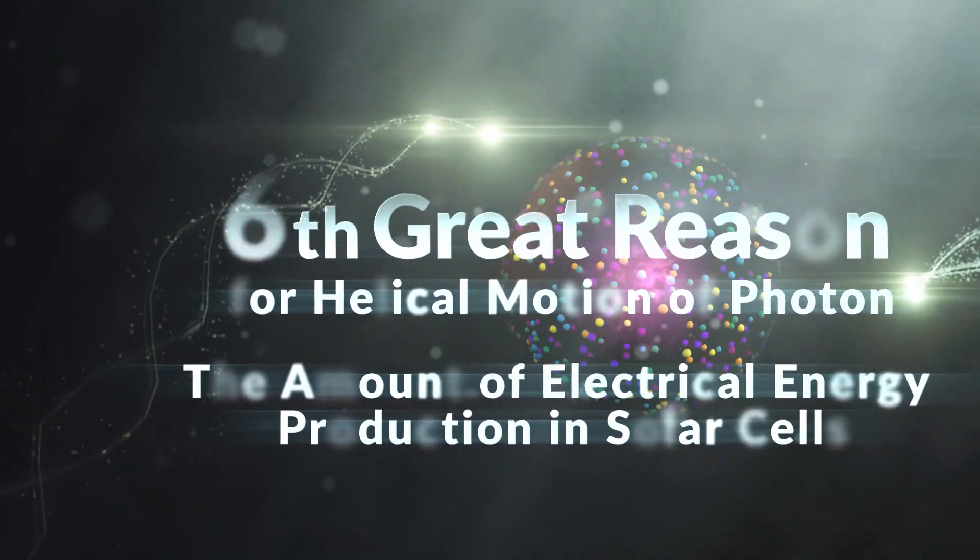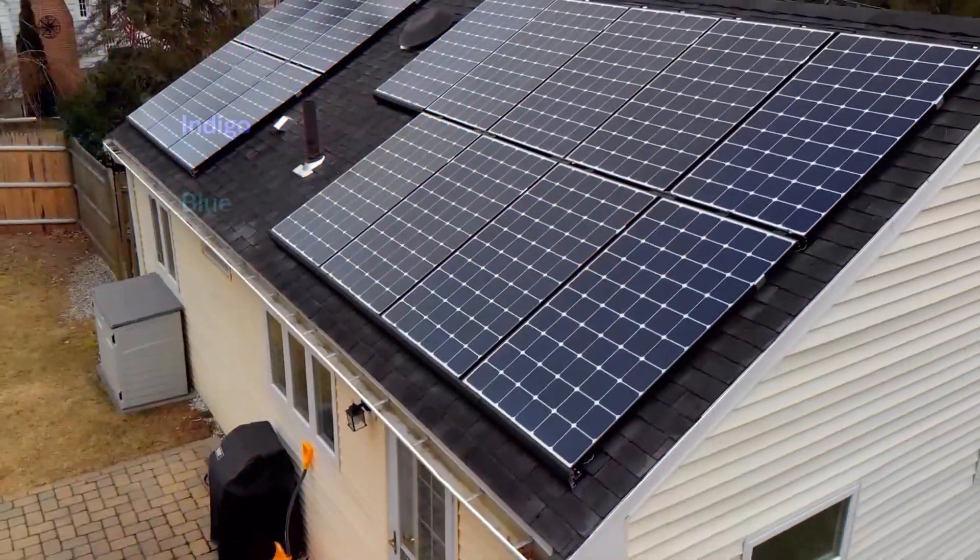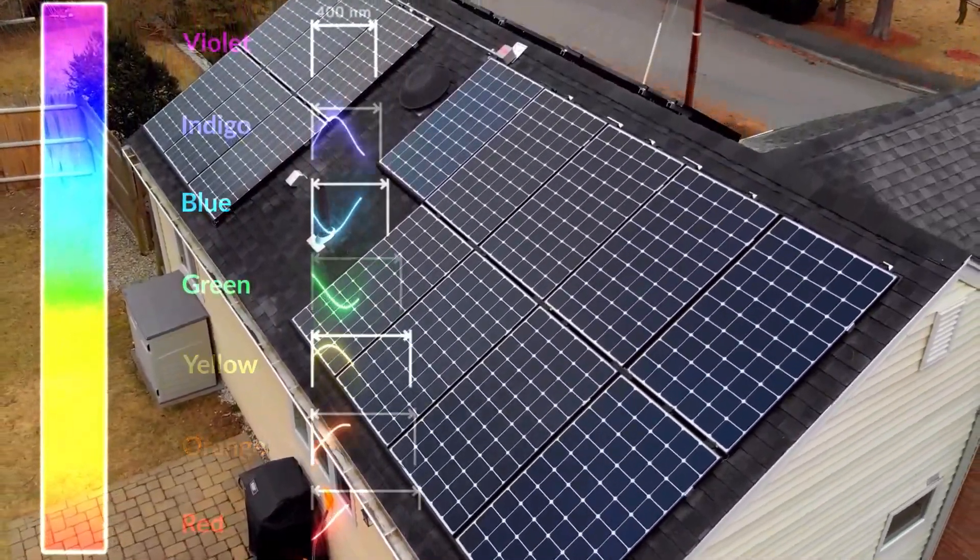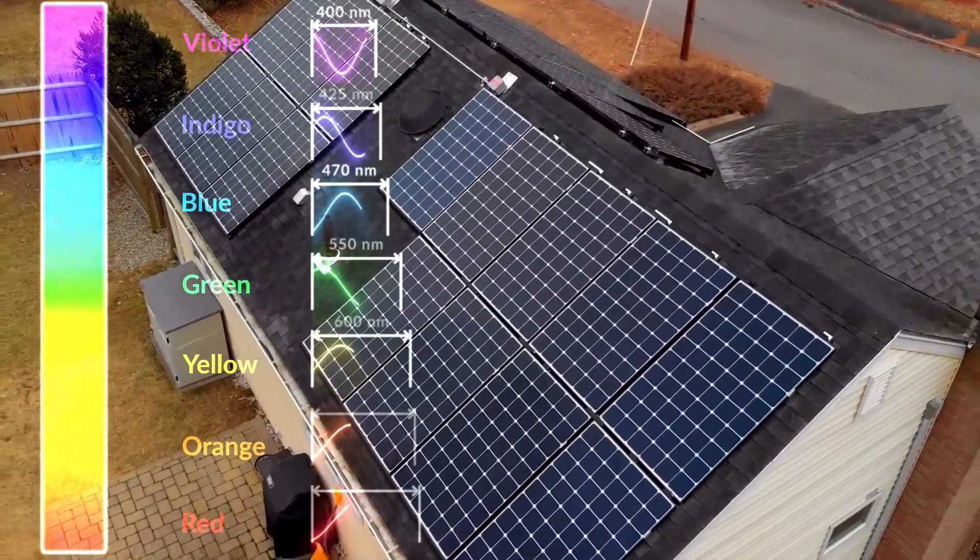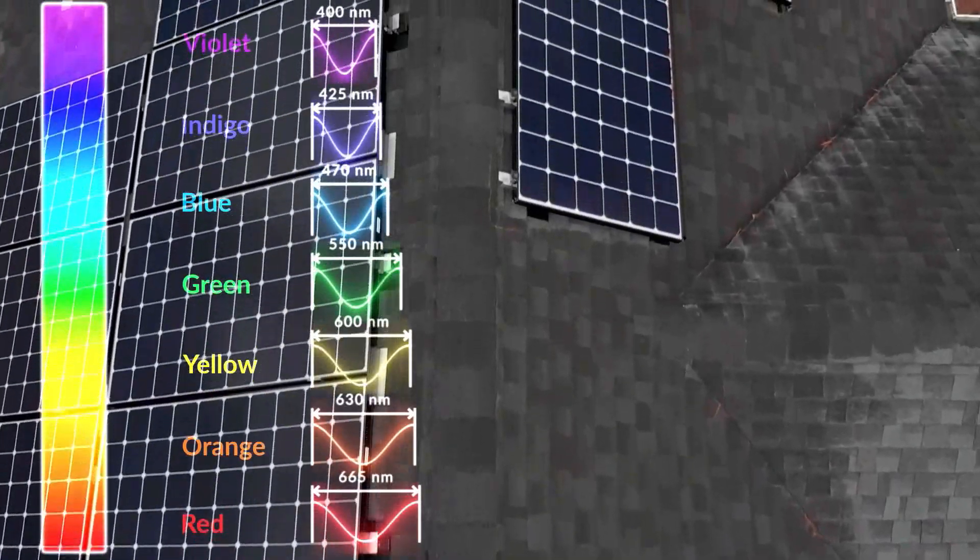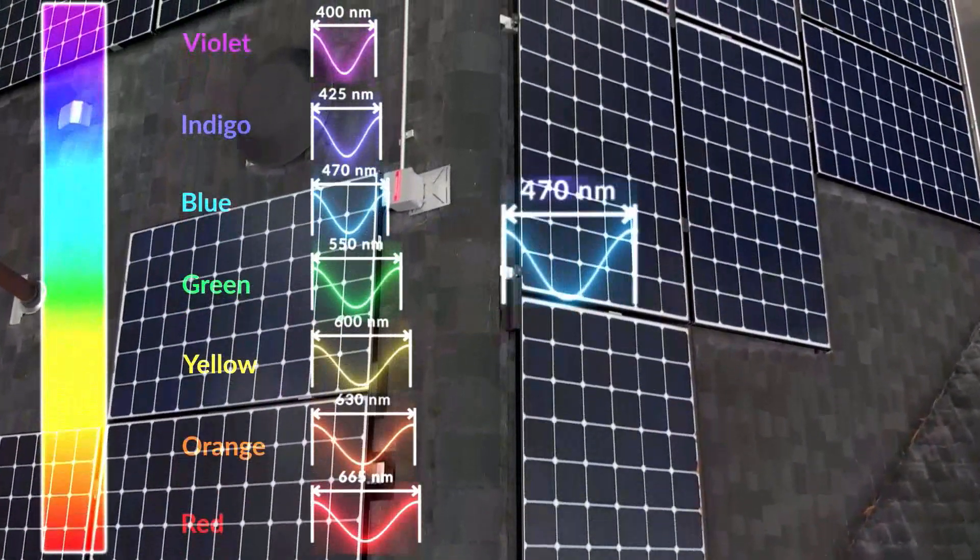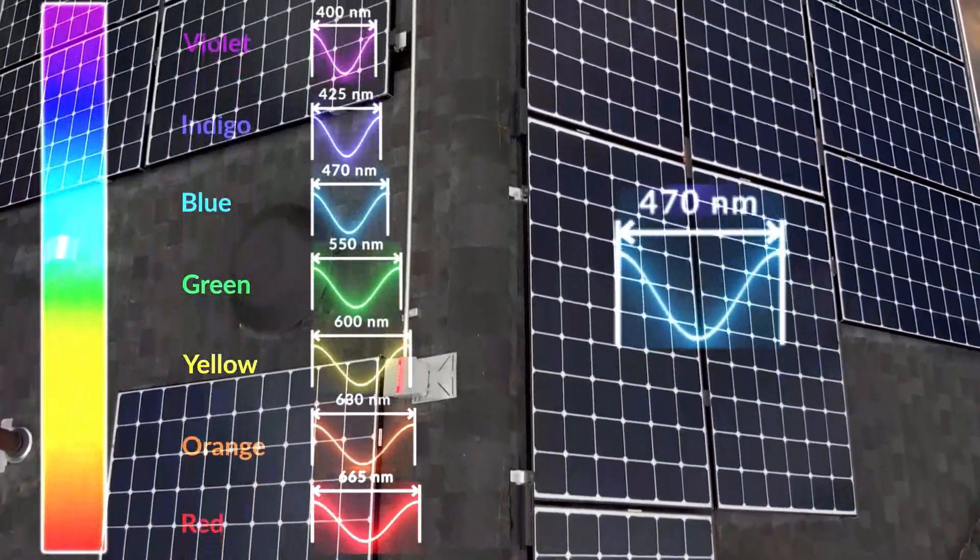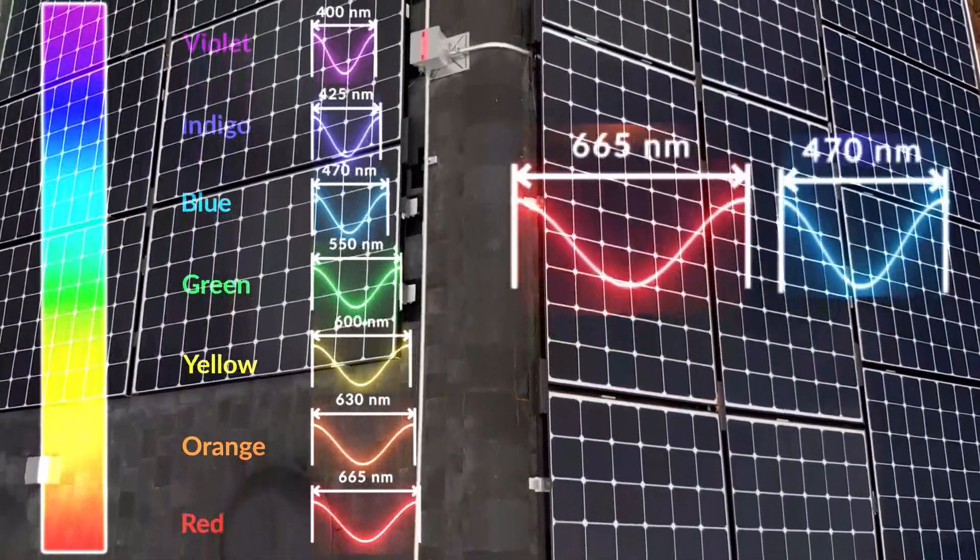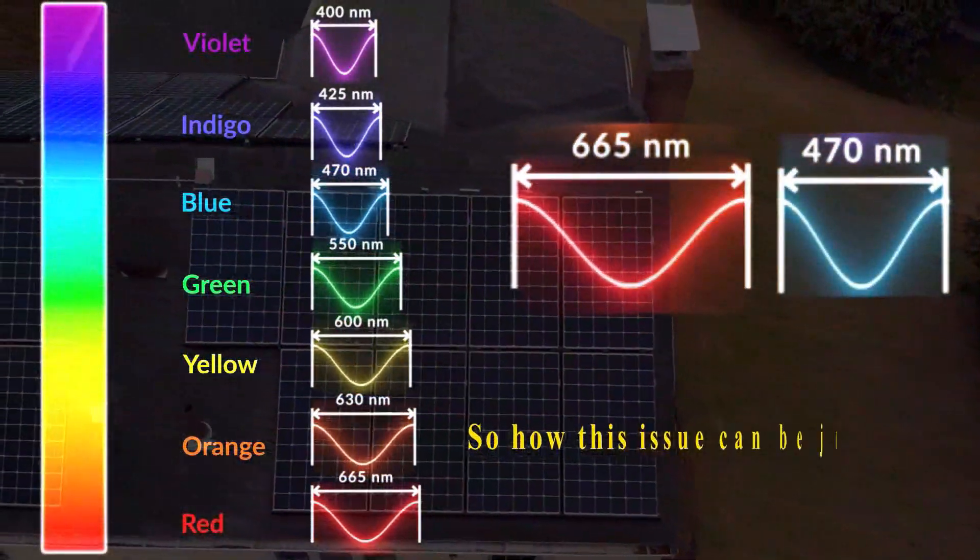6. The Amount of Electrical Energy Production in Solar Cells. Experiments show that amount of electrical energy production in solar cells have a direct relation to the wavelengths of the entered light. Thus, in the visible light spectrum, the red light has a higher output than the blue light. But as mentioned, according to the wave-particle theory, the red light is considered to have lower energy than the blue one.